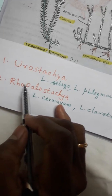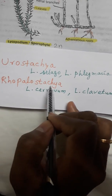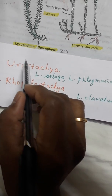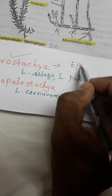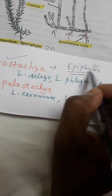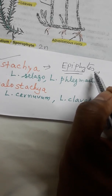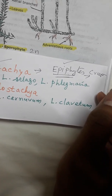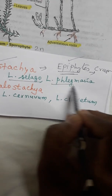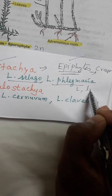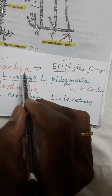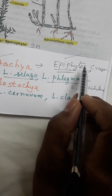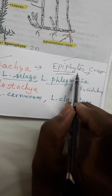Lycopodium genera are divided into two types. One genus group is Urostachya, which means these Lycopodium species live as epiphytes — growing on other plants, greenish in color, with creeping epiphytic lifestyle. Examples include Lycopodium selago, Lycopodium plumeria, and Lycopodium lucidulum. The identification characters of Urostachya are epiphytic lifestyle, green color, and dichotomous branching.